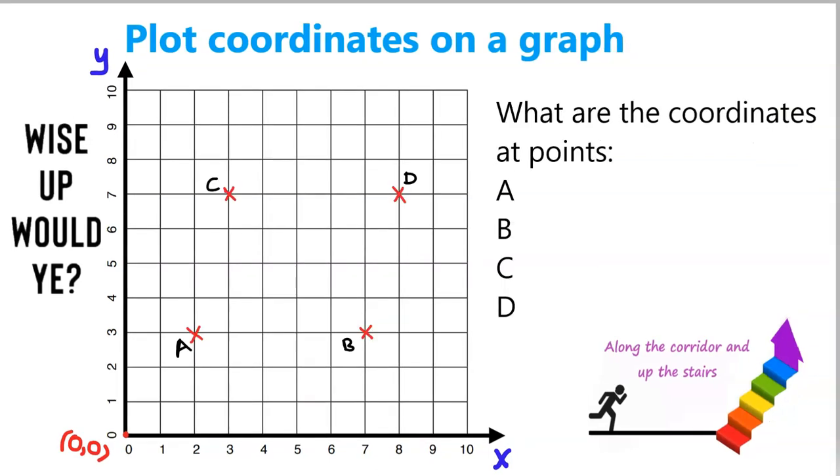Okay, we've had some practice at plotting points on the graph. This time, we're already given those points and we're asked what's the coordinates. Well, we know straight away or we remember the coordinates come in brackets and they're in two parts: they have an x part and a y part.